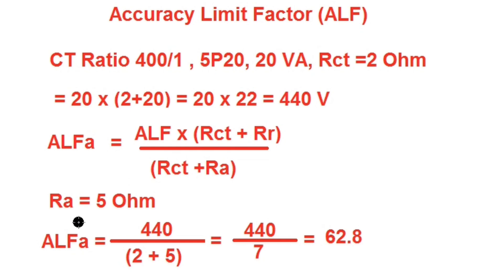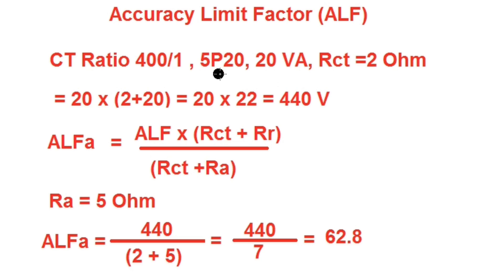With actual burden on the CT secondary side being 5 Ω and saturation voltage Vs = 440 V, the actual accuracy limit factor ALF_actual = Vs / (RCT + RA) = 440 / (2 + 5) = 440 / 7 = 62.8 times. So although the nameplate accuracy limit factor is 20 under rated burden of 20 VA, since the actual burden is one-fourth of the rated burden, the actual accuracy limit factor becomes 62.8 — more than three times the rated accuracy limit factor.